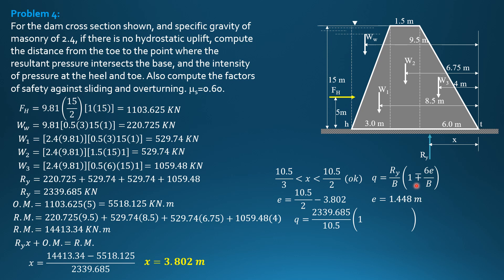So 2339.685 over 10.5, 1 minus or plus 6 times 1.448 over 10.5. Using minus, Q heel, pressure at the heel, is 38.45 kilopascals. Compressive stress. Compressive stress also at the toe, which are treated positive because they are pressure. Using plus, Qt is 407.2 kilopascals.